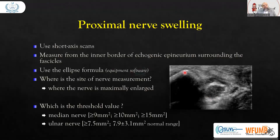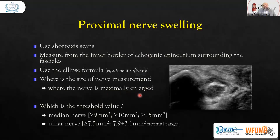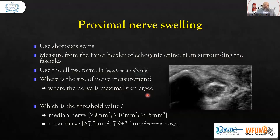Measure from the inner border of the echogenic epineurium surrounding the fascicle. Use the ellipse formula, which is already available in the ultrasound machine software. The site of nerve measurement is important — it is where the nerve is maximally enlarged. Place the probe, rotate it, and then move downward and upward to find which cross-section has the maximum area, then measure the maximum area.